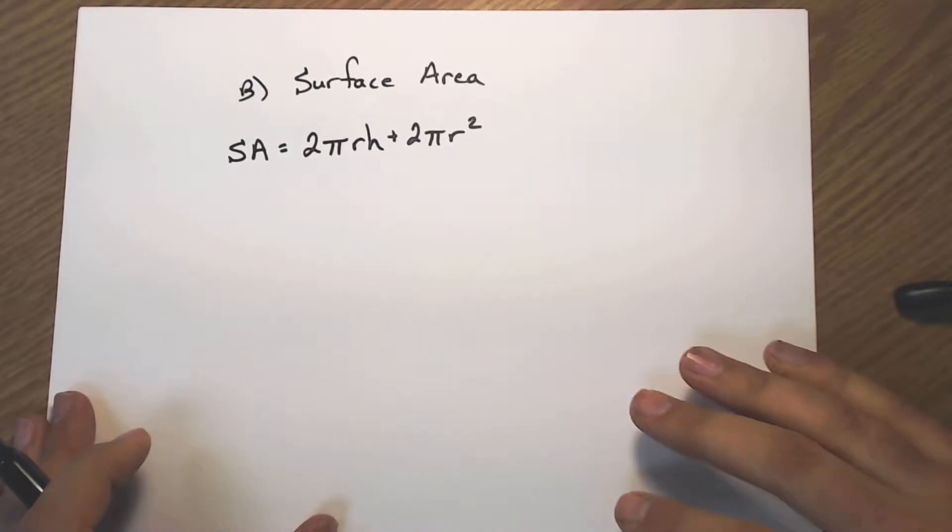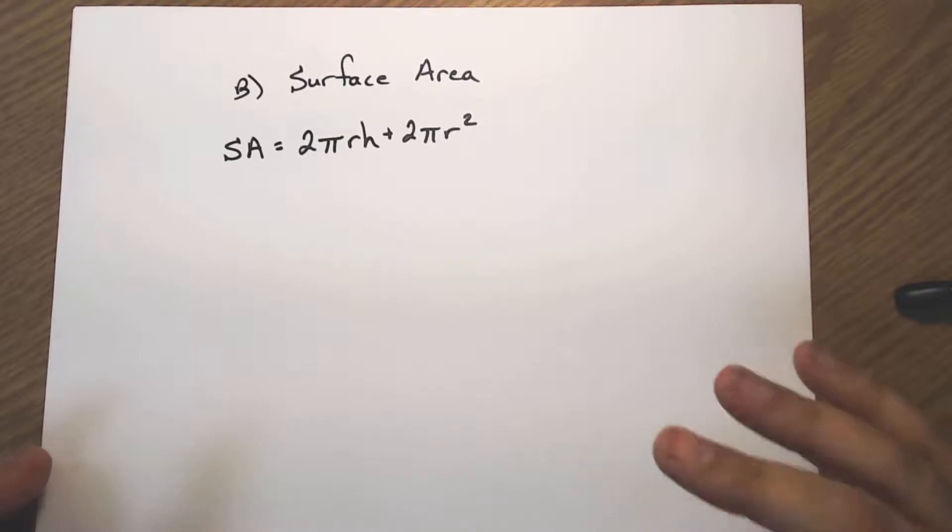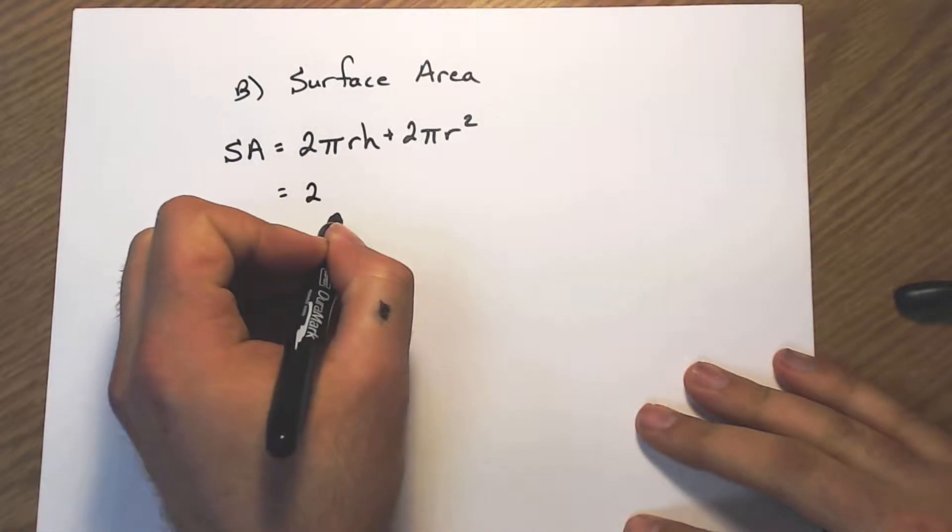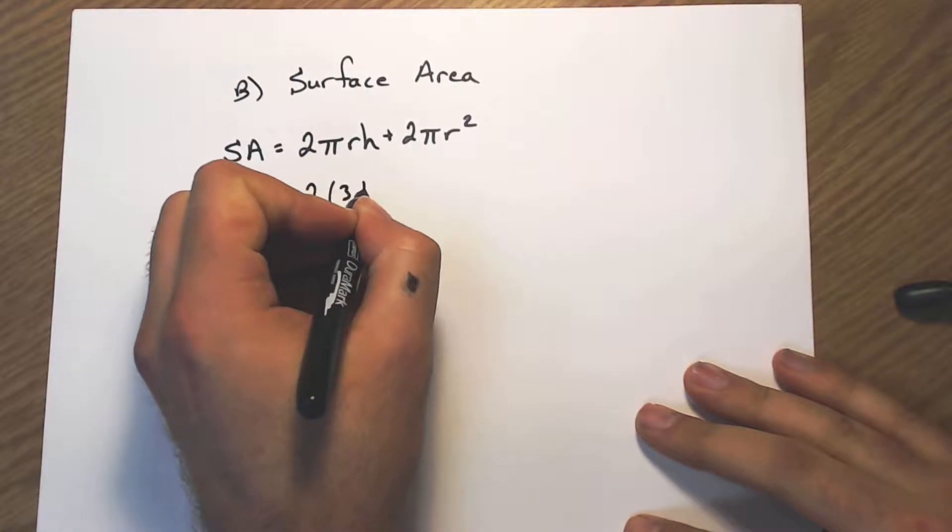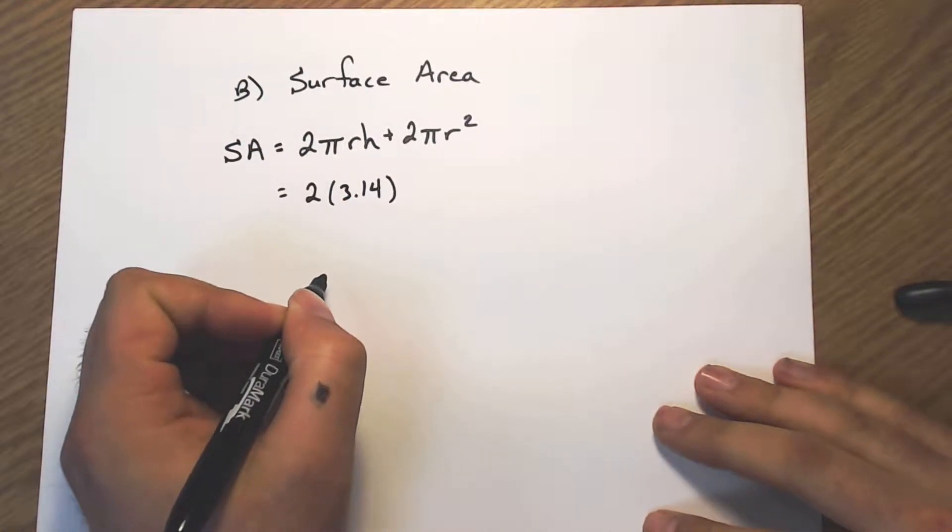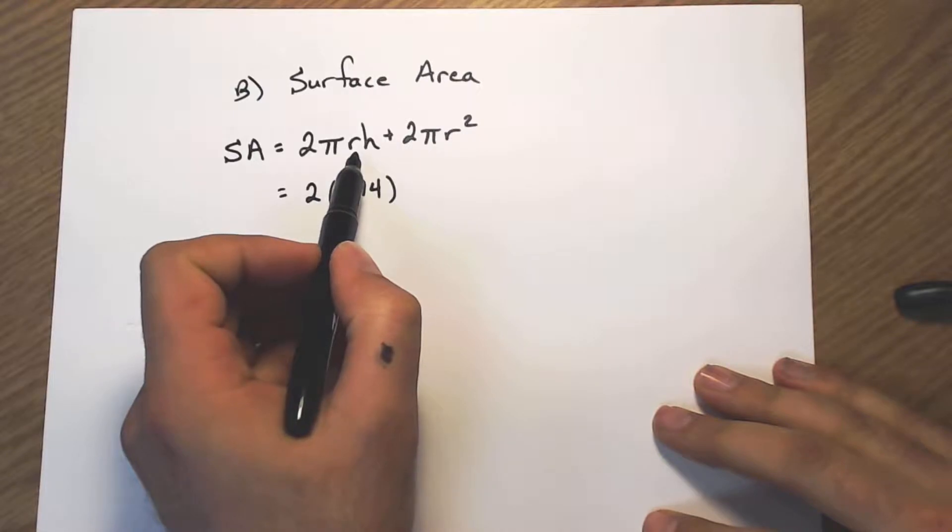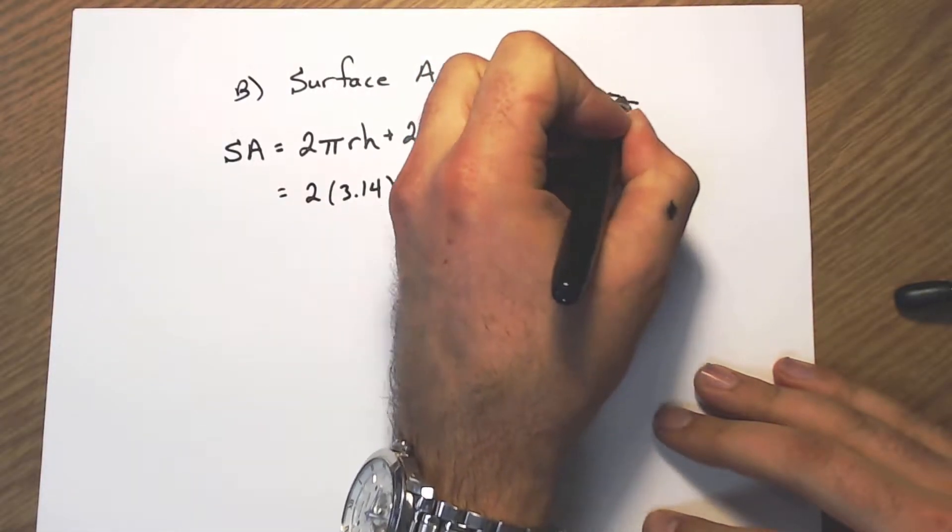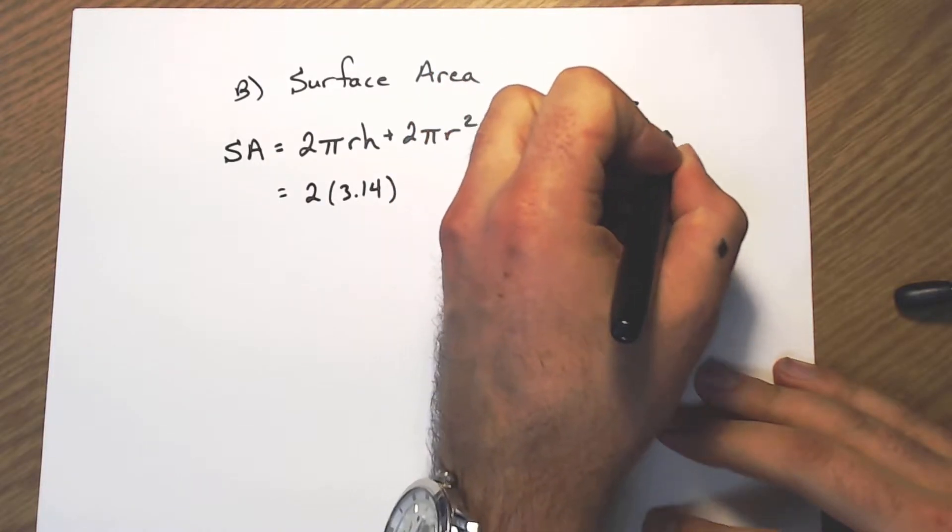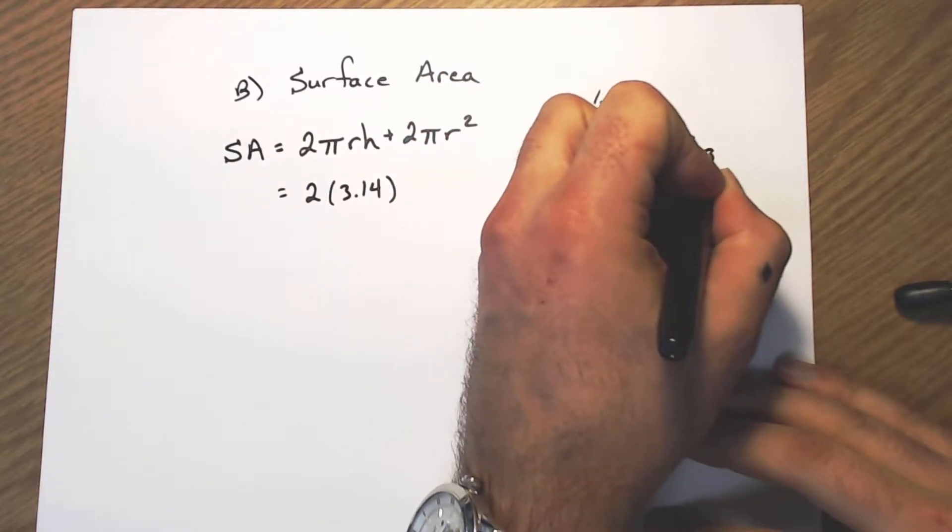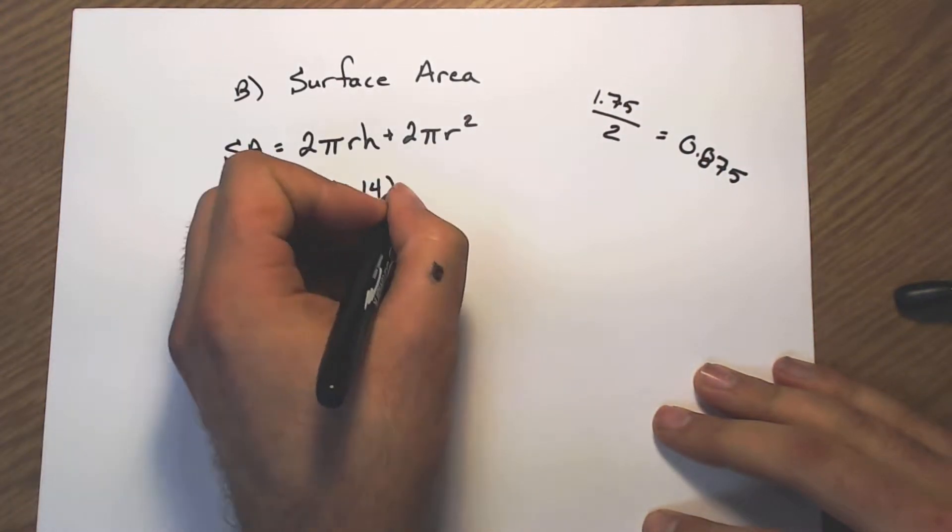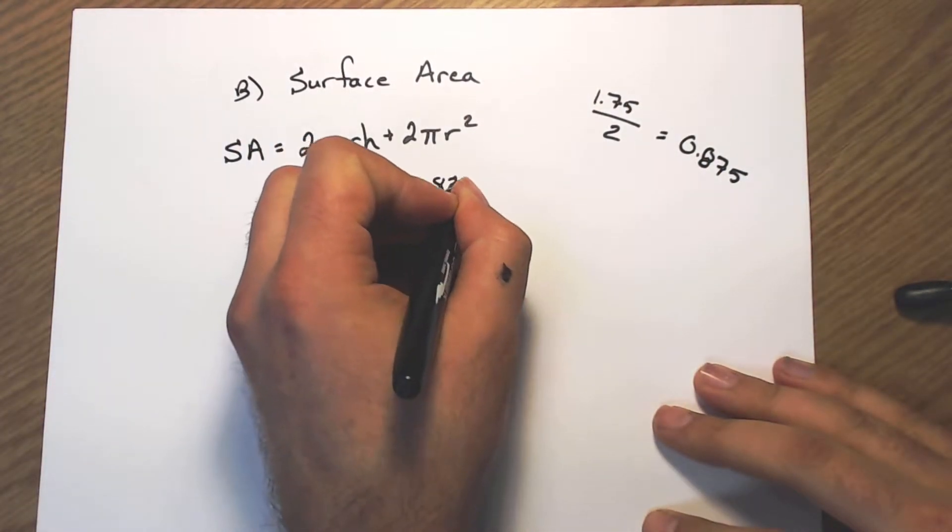Now let's go on to do surface area of our cylinder. Formula looks a little bit scarier but it's not too bad at all. Again, we're just substituting in the things we know. I know pi is 3.14. My radius is half my diameter just like last time and it was 1.75, so I divide that by 2 and that's 0.875.